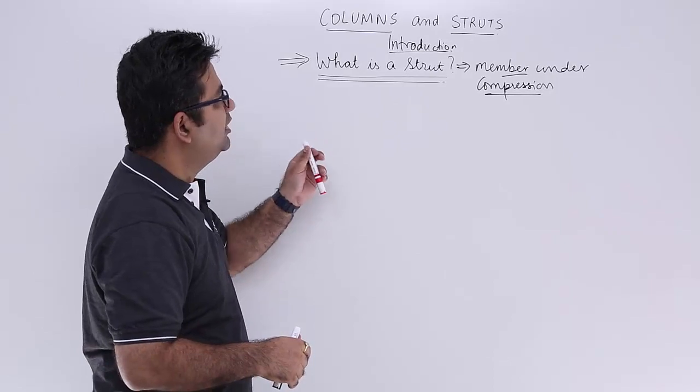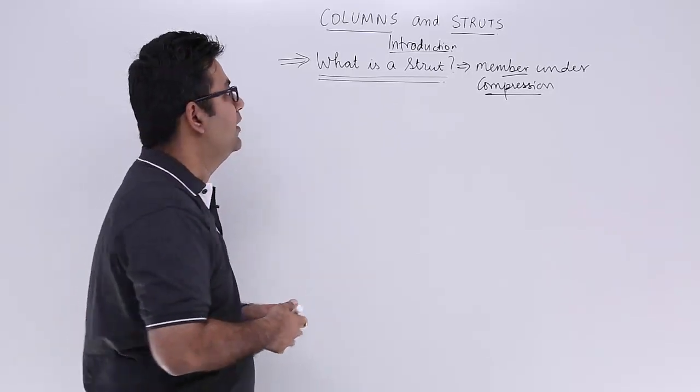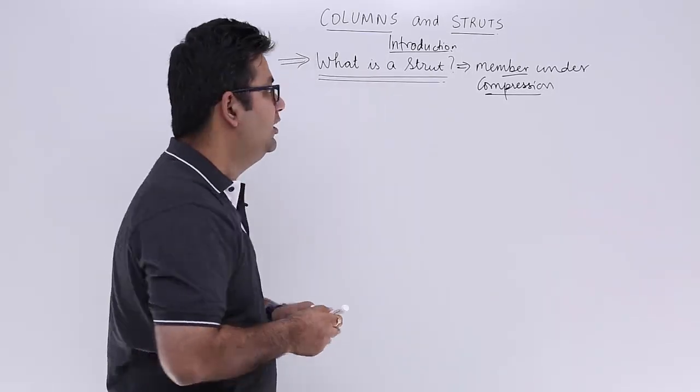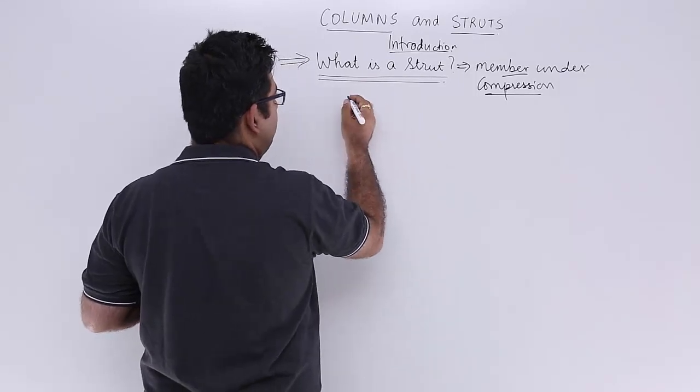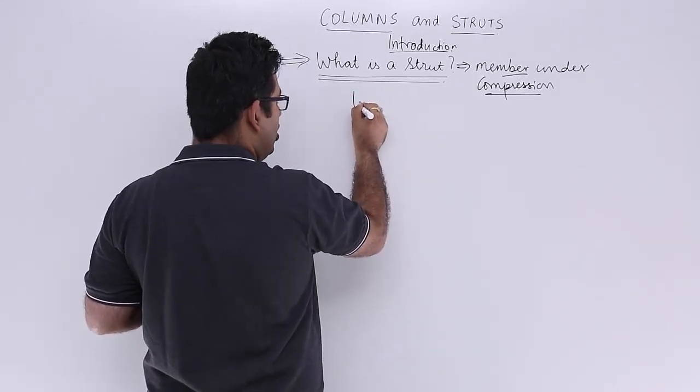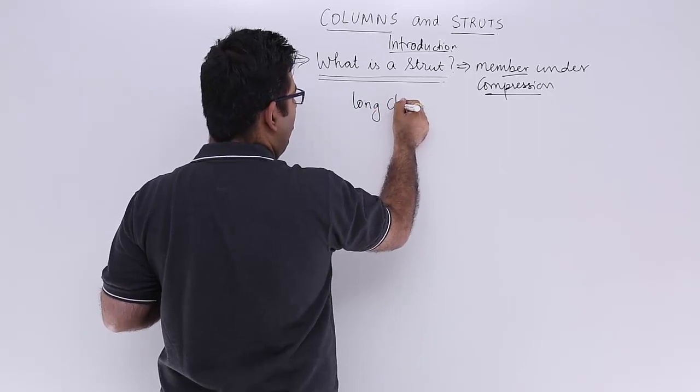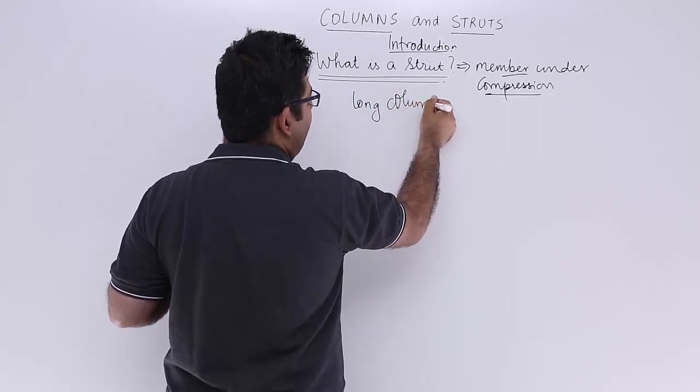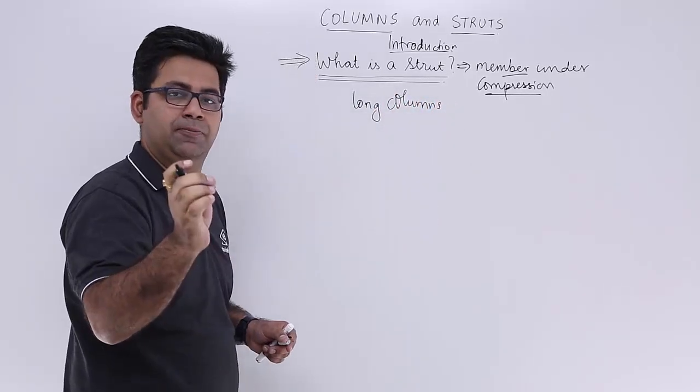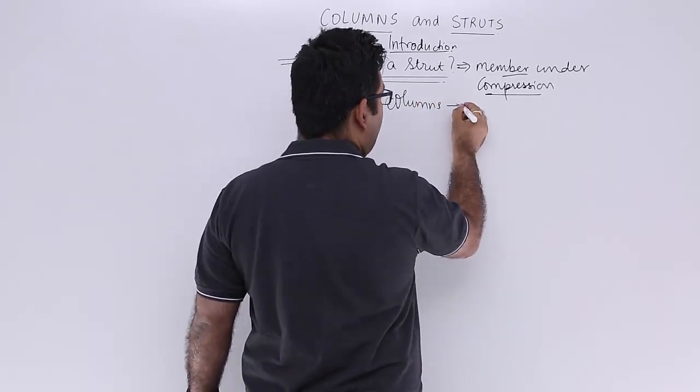Now if I make this strut vertical, it becomes a column. There are two kinds of columns: long columns, which are basically very slender—slender means thin.